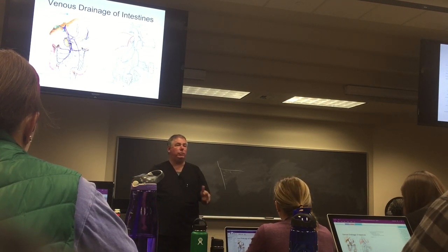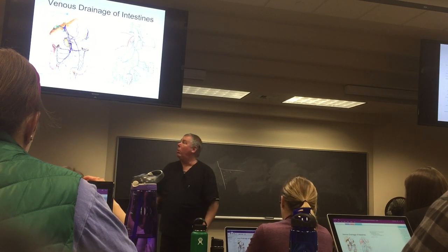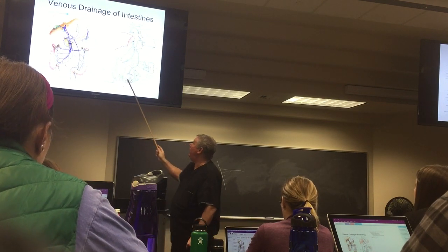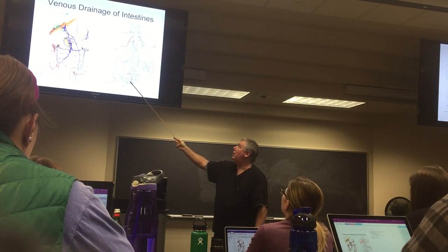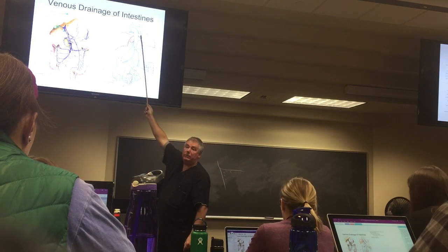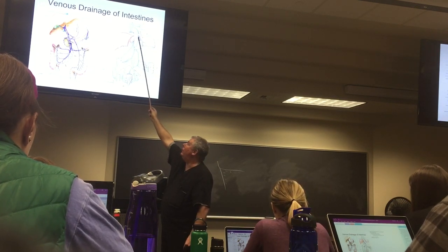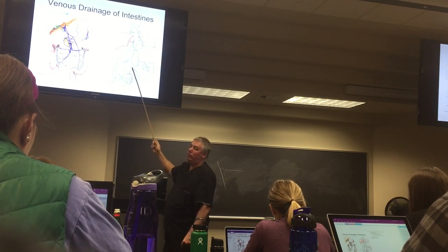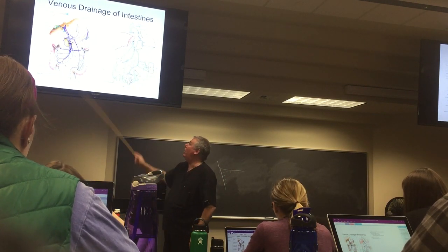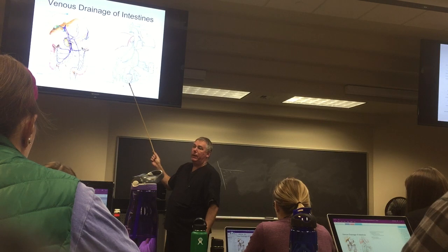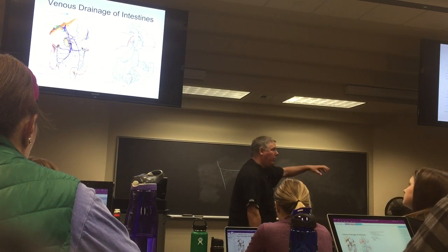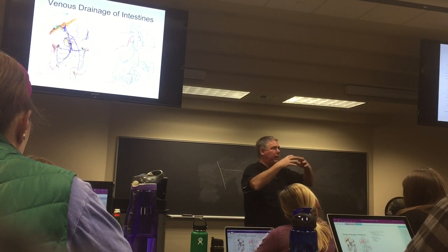There are a few places where those two systems connect — the anastomoses. One is around your belly button. One is back here at your anus. And one is up there by your esophagus. Those are the three main points. It also interconnects with the azygous system, but the three important points are the umbilicus, the anus and rectum, and around the esophagus. This is where portal blood intermixes with caval blood because of the anastomoses.